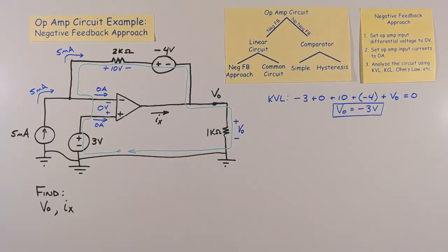Now let's find the current IX, which is current coming out of the op-amp's output. We're looking for a way to write an equation whose only unknown value is IX. Let's try to write a KCL equation at the node connected to the op-amp's output.